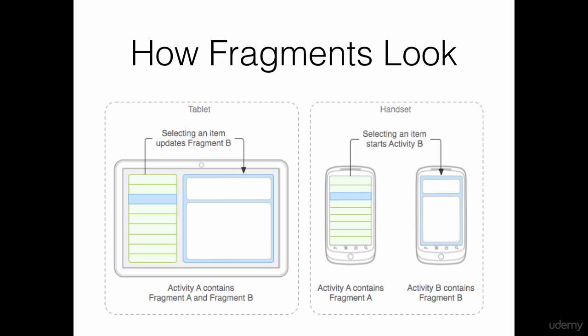Now if you notice the tablet version of the same application, the entire activity is divided into two fragments: fragment A and fragment B. In the case of a tablet, activity A contains both fragment A and fragment B. The green list view you can see is fragment A, and the white list view on the right-hand side of the tablet is fragment B.